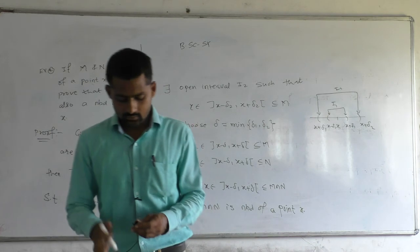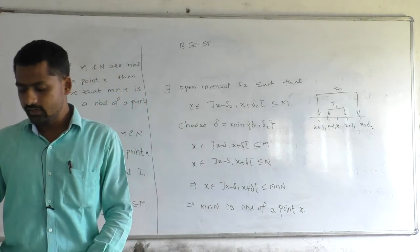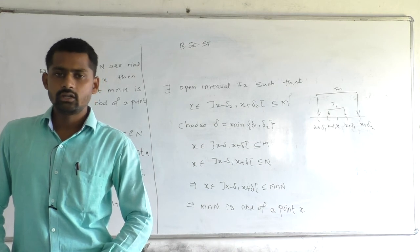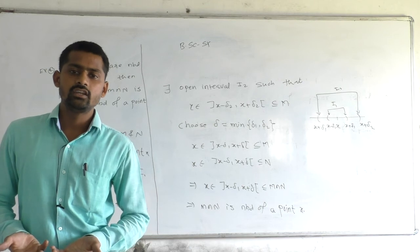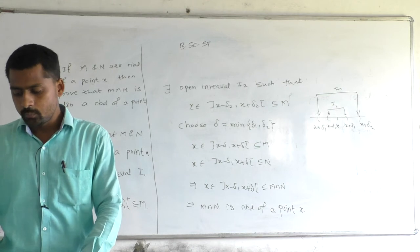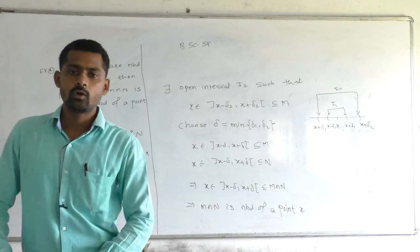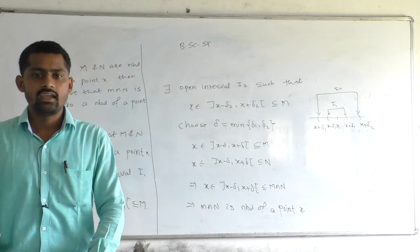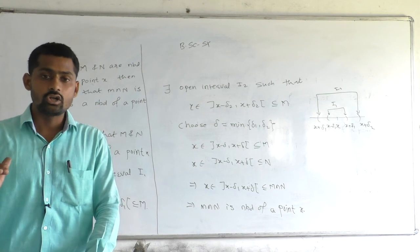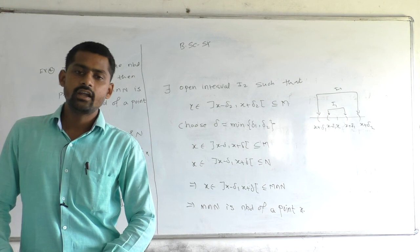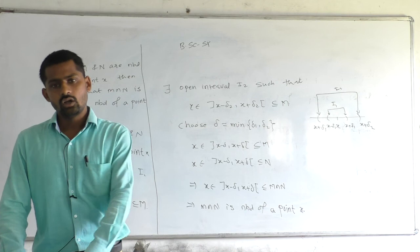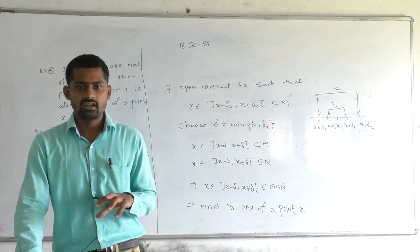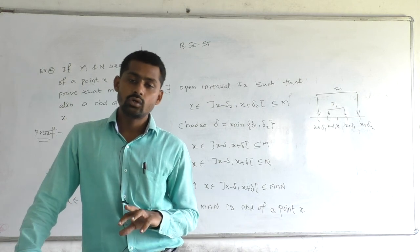To summarize: example one — a non-empty finite set is not a neighborhood of any of its points, because every open interval necessarily contains infinitely many points. Example two — a superset of a neighborhood of point X is also a neighborhood. Example three — the union, whether finite or arbitrary, of neighborhoods of point X is also a neighborhood. Example four — if M and N are neighborhoods of point X, then their intersection M ∩ N is also a neighborhood of point X.